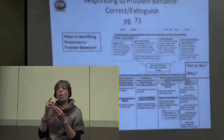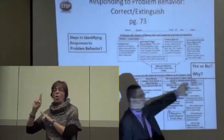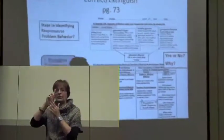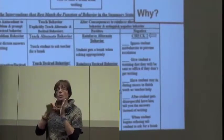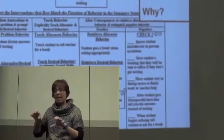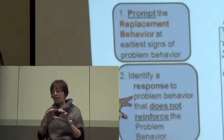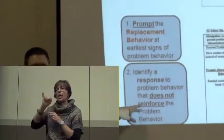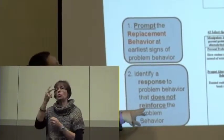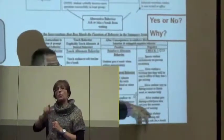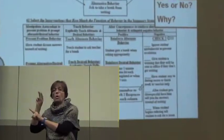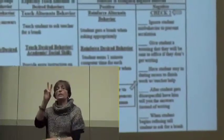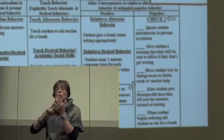When we talk about corrective or extinction strategies — on the far right-hand column, 'correct and extinguish' — we want to prompt the replacement behavior at the earliest signs. We also need to identify a response to the problem behavior that doesn't reinforce it. Those are the two rules. Go to the last column — 'correct and extinguish' — and select two options for Morgan on page 73.